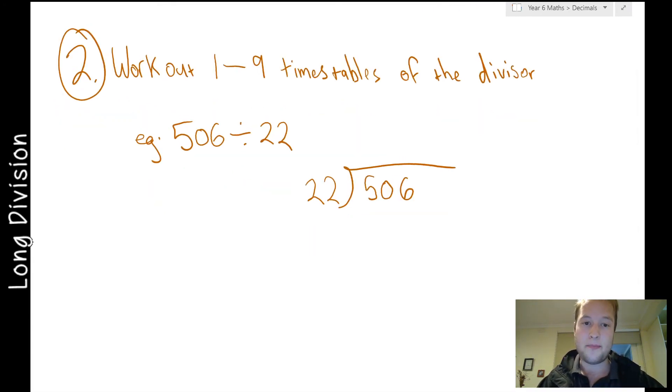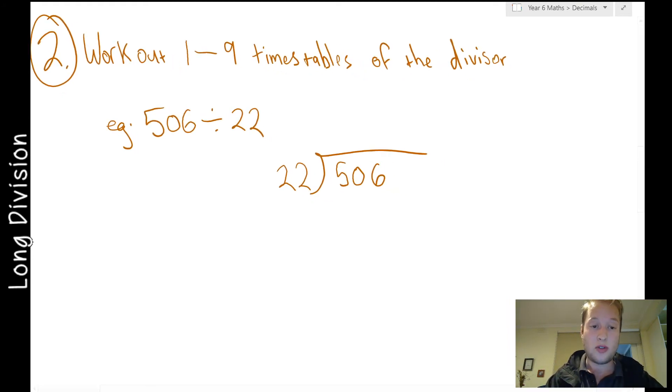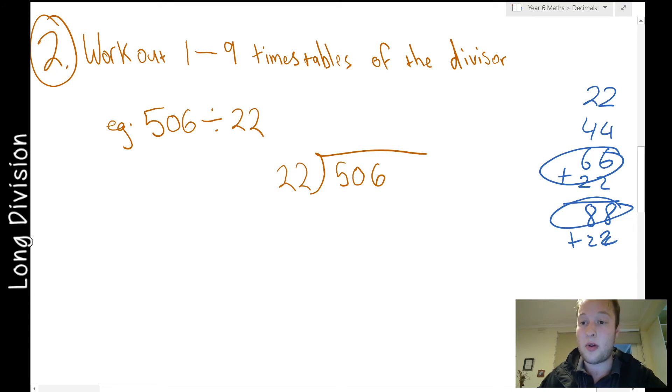Step number two. As I said earlier, I think it's always a good idea to write your time tables on the side. So we've got 22 into 506. So I put 22 first. I'm going to count by 22s. I don't know my 22 times tables. So either you can just do it in your head and go, 2 plus 2 is 4, 2 plus 2 is 4, so that's 44. Then plus another 2 onto 4 is 6 and plus another 2 onto 4 is 6. You could just go plus 22 equals, so 6 plus 2 is 8, 6 plus 2 is 8. I'm going to pause it now, I'm going to write them down.